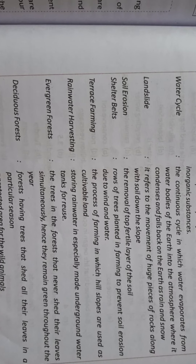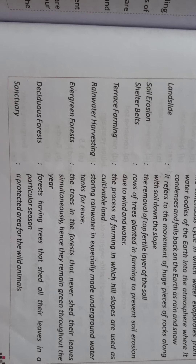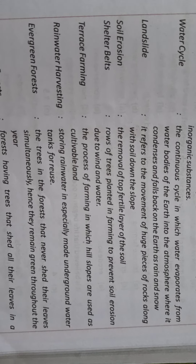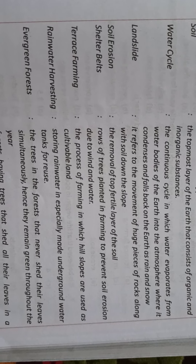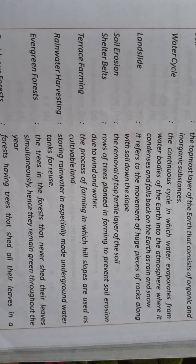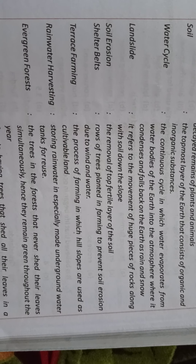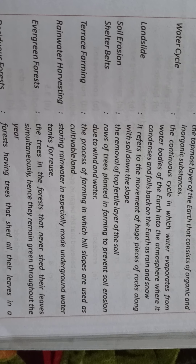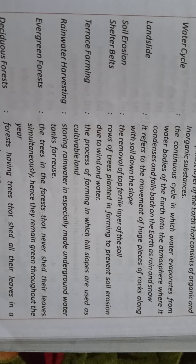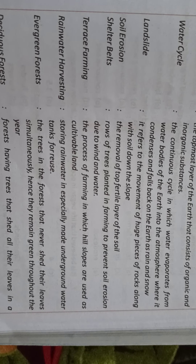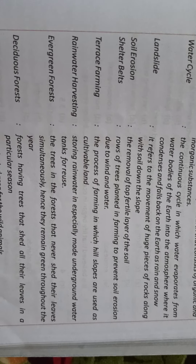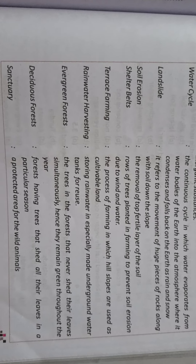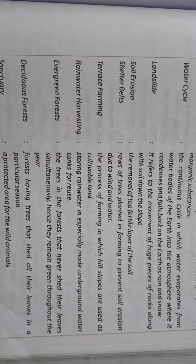Soil erosion: soil ki top fertile layer ka removal hi soil erosion kehlata hai. Shelter belts: rows of trees planted in farming areas. Farming mein trees plant karna, in which hill slopes are used as cultivable lands — jaha par jo hill slopes hain unhe cultivable lands ke tarike se use kiya jata hai.